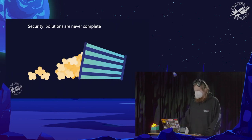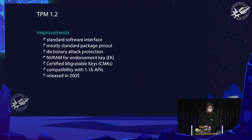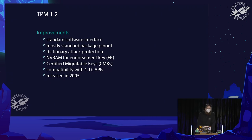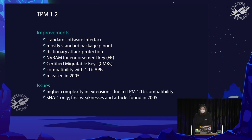So they came up with something new. TPM 1.2 brought many improvements: the software interface was now standardized, allowing compatibility in software. There was mostly a standard package pin-out — though still not 100% compatible between vendors. The dictionary attack problem of guessing passwords was improved but not fully solved. The release was in 2005.